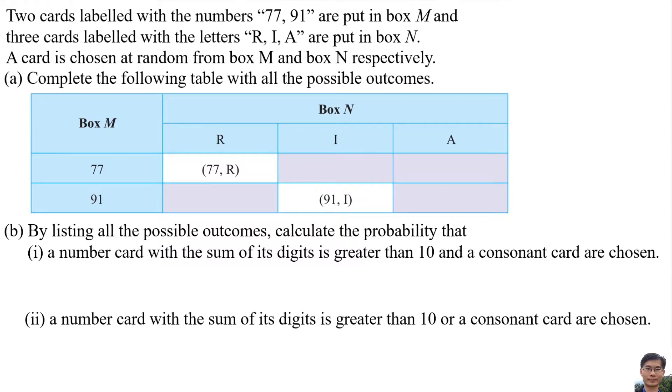Two cards labelled with the numbers 77 and 91 are put in box M and three cards labelled with the letters R, I and A are put in box N. A card is chosen at random from box M and box N respectively.